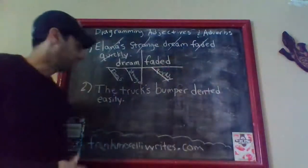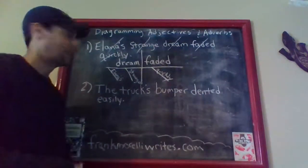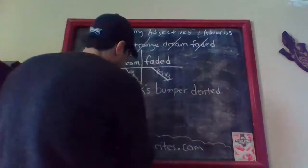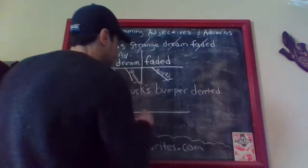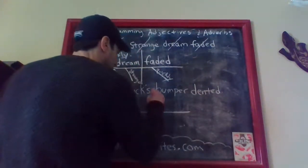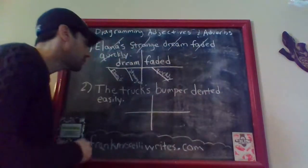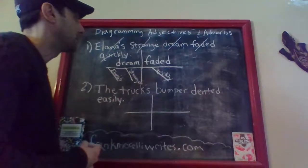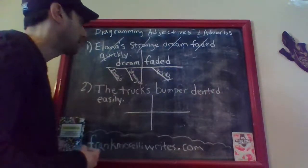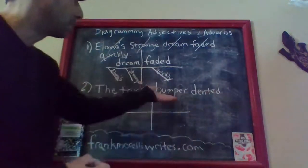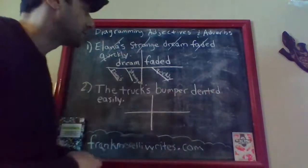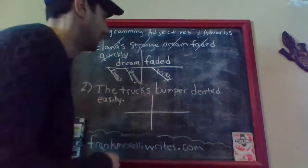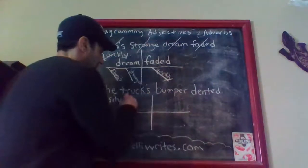I'll pause for a second while you do this one — and we're back. Okay, so here is the solution for this sentence. You draw your diagram and you're going to try to find your simple subject. Again, don't be tricked. 'The truck's bumper' — the bumper is what this sentence is really about. It is a noun, and the sentence is about it denting easily. So 'bumper' is your simple subject.